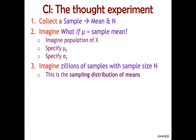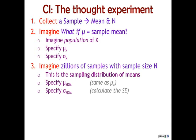And this is the sampling distribution of means. The mean of that distribution is the same as our population mean. And our population mean, we already imagined, has a mean that's the same as our sample mean. So the mean of that sampling distribution of means is the sample mean. Then we specify the standard deviation of that sampling distribution of means, and we calculate that by dividing the original standard deviation of the original distribution by the square root of our sample size.